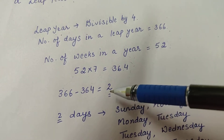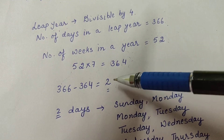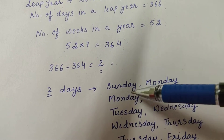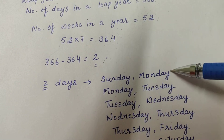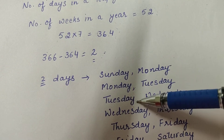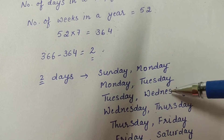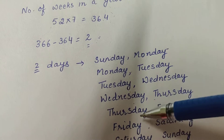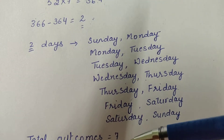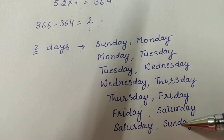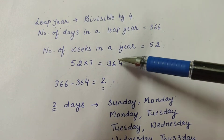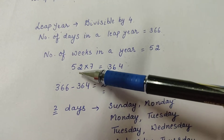So what about the remaining two days? In a leap year, these two days can be either Sunday–Monday, Monday–Tuesday, Tuesday–Wednesday, Wednesday–Thursday, Thursday–Friday, Friday–Saturday, or Saturday–Sunday.